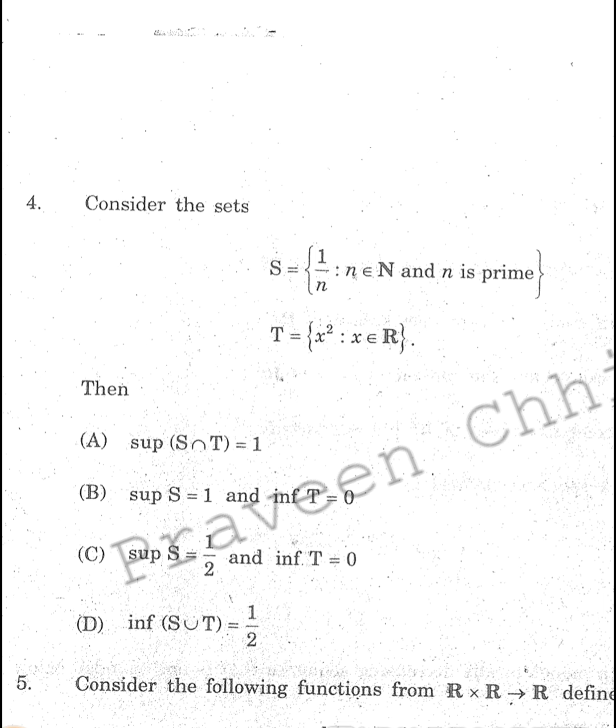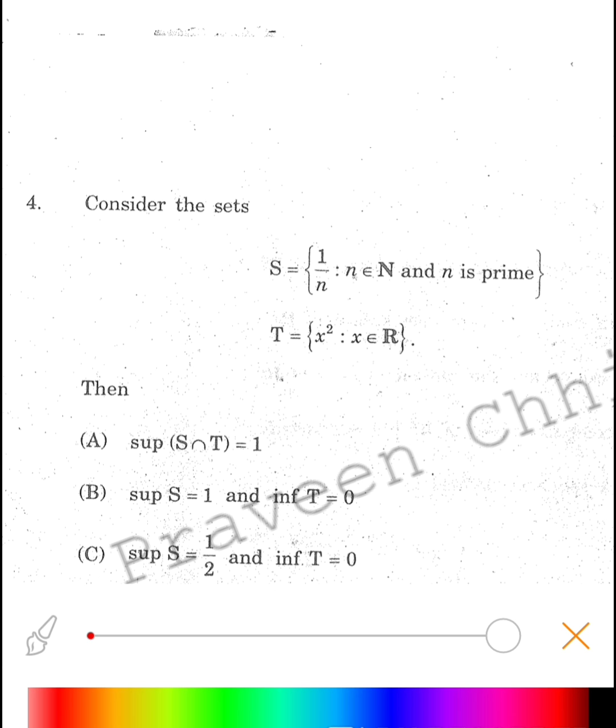1 by n where n belongs to natural numbers and n is prime, and T equals x squared where x belongs to real numbers. So first of all, the important thing is to make the set.